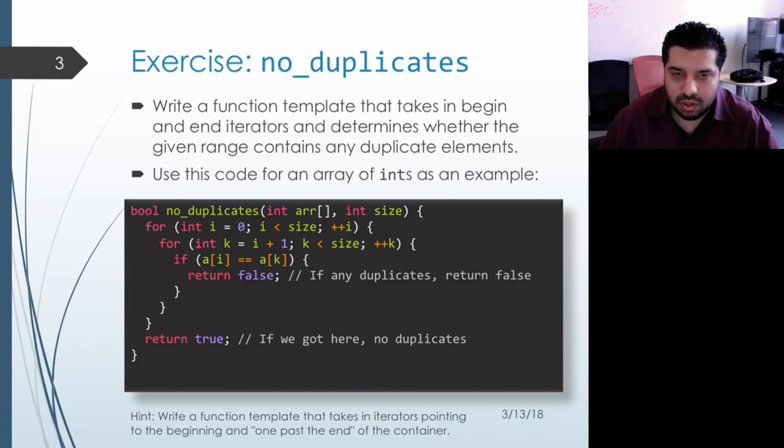Now for a model over here we have a version of the function that actually works on just an array of integers. So it takes in an array and a length for that array and what we're doing is we're comparing every pair of elements.